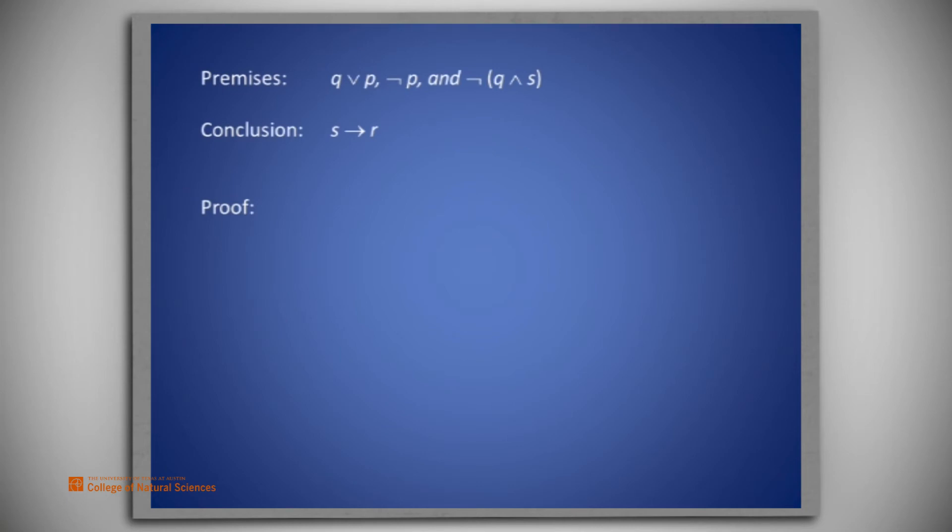Our intermediate goal of showing Q is true is easy to obtain, and then from that, the other intermediate goal, showing S is false, is also easy to get.